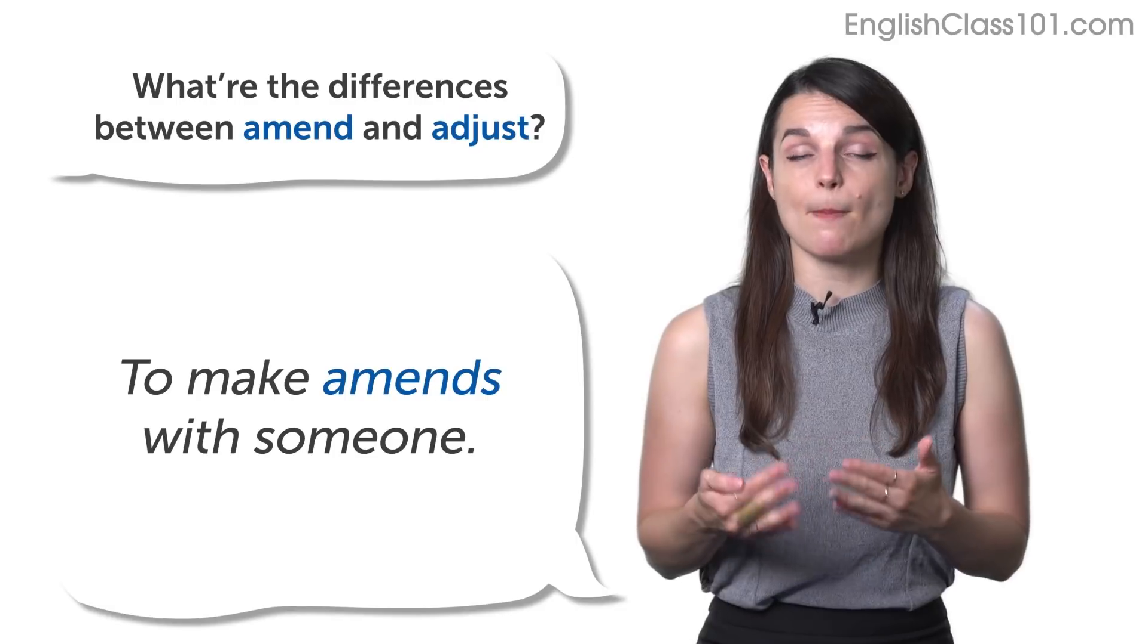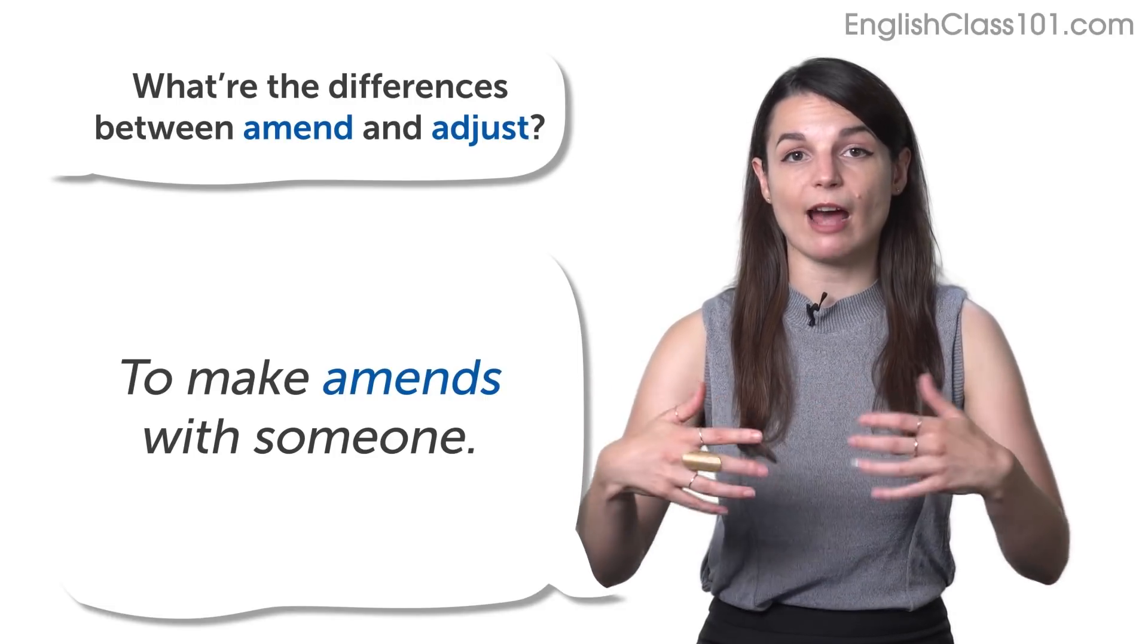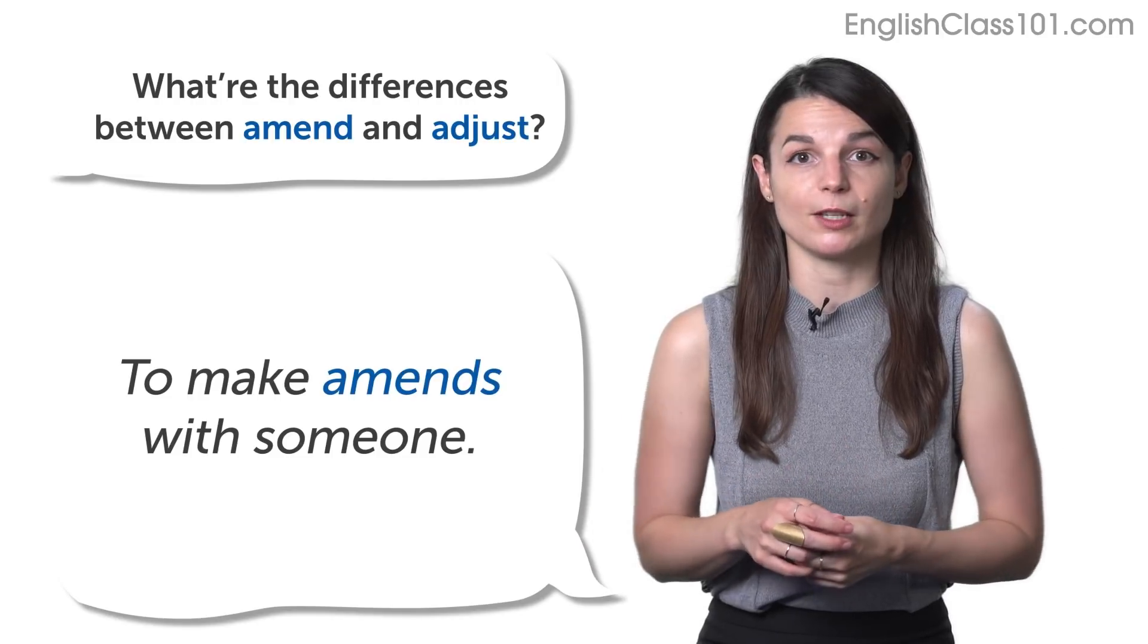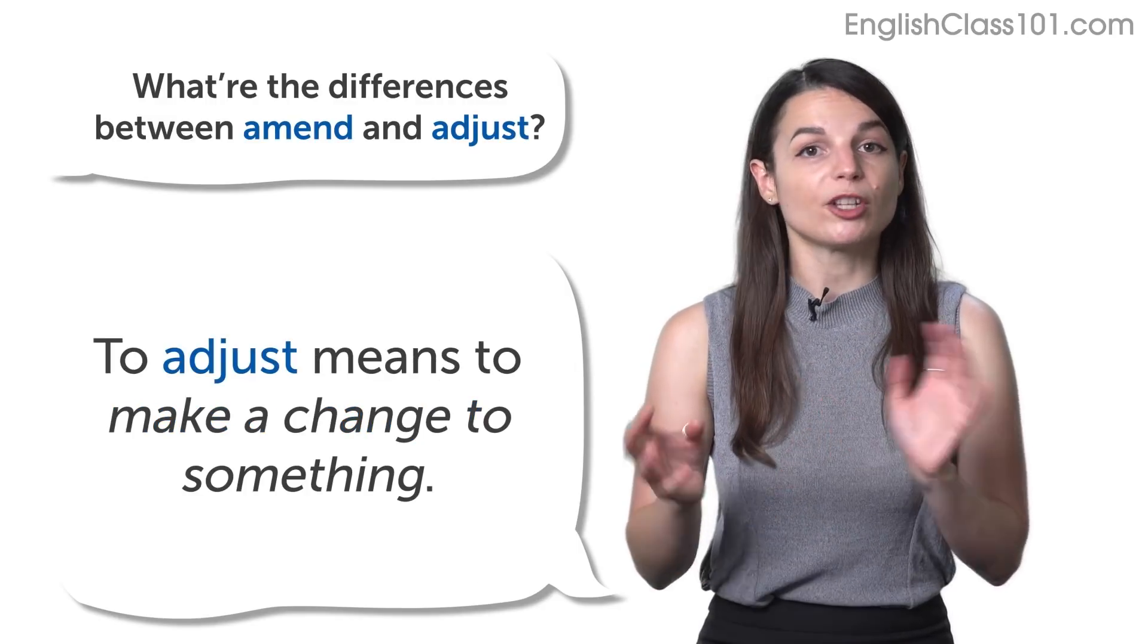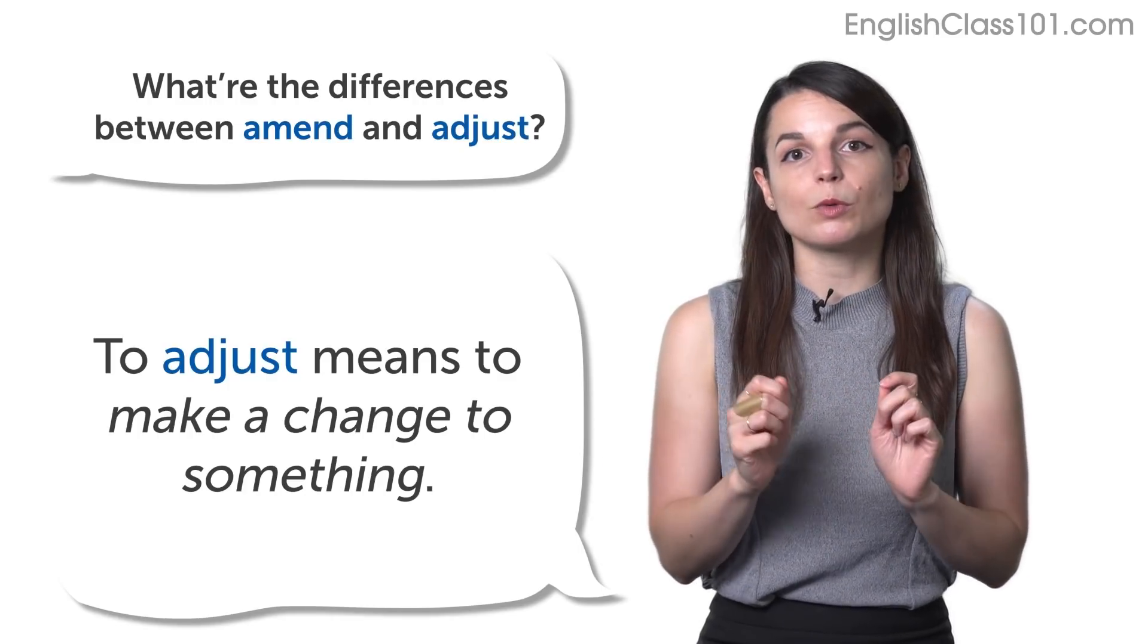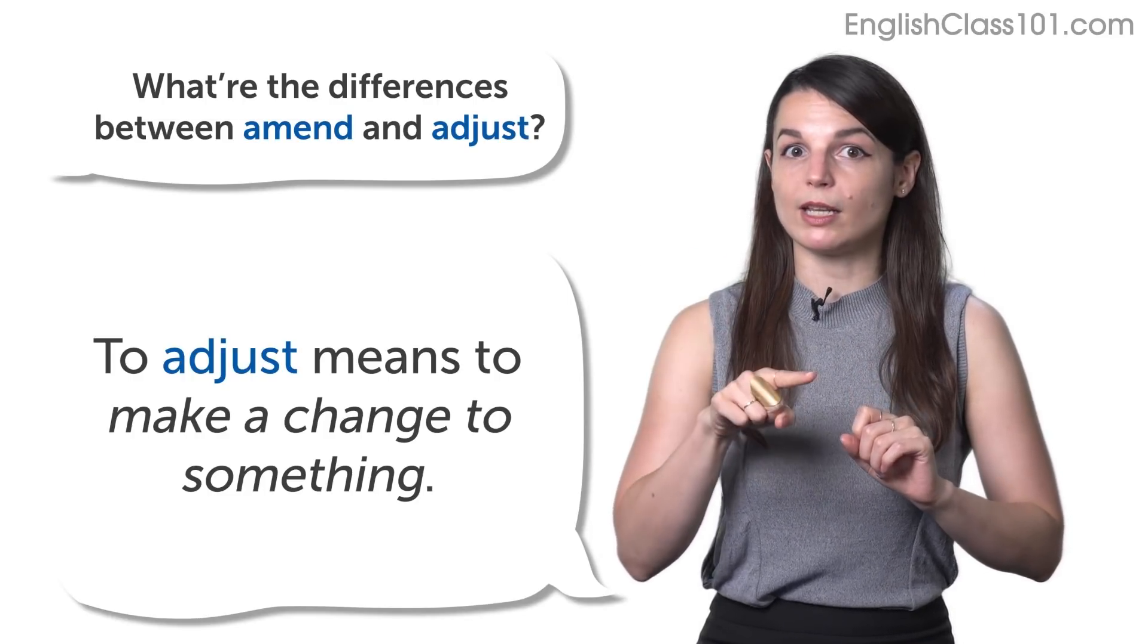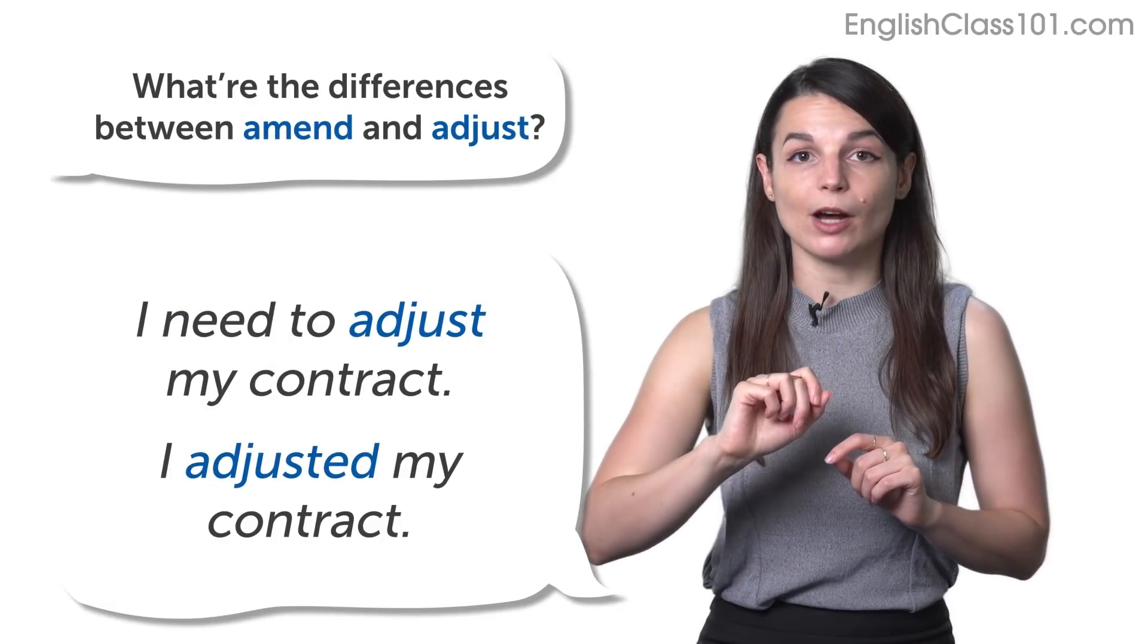You might also hear this verb used when you're talking about fixing relationships with someone, like you might hear the expression to make amends with someone. That means you fix a relationship with someone after you have a fight or a disagreement. So, you might hear it in this way too. To make amends is usually the expression it's used in. Okay. Now, let's compare this verb use of amend to adjust. To adjust something means to make a change to something. So, again, just as with the agreement or the contract we talked about before, if you finish the agreement or you finish the contract and later you realize, oh, we need to make a change. You can say, I need to adjust or I adjusted my contract.